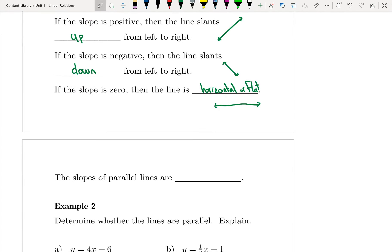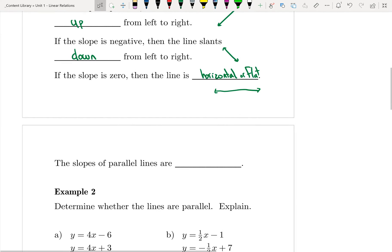And if we recall from grade 9, the slopes of parallel lines are the same, or you could say equal. So what that means is parallel lines are lines that never touch or never intersect. And if they never intersect, that means they have to have the same slope.